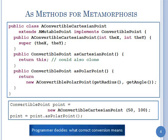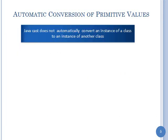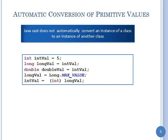So it's not totally unreasonable to expect that, given what you see with primitive values. Java doesn't convert an instance of a class to another instance, but look at how many of these statements are legal: I assign intval a 5 — legal. Long is a long integer, and assigning longval from intval is legal, even though they are different types. Assigning doubleval from intval is legal. Assigning a very large value to longval is legal. And assigning intval from (int) longval — is that legal?